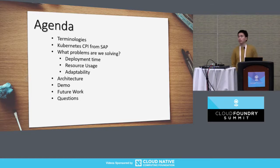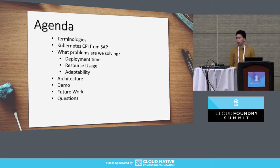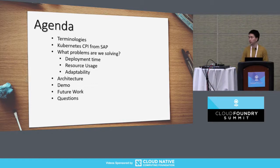So for the agenda today, I'm going to talk about some terminologies in case you don't know them. Then I'll introduce the Kubernetes CPI from SAP. And then we will address some of the problems we are trying to solve. Finally, some architecture, demo, and future work. At the end, some time for questions.